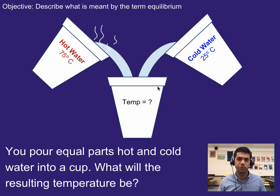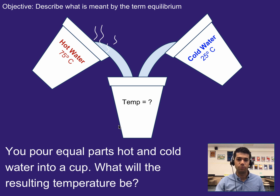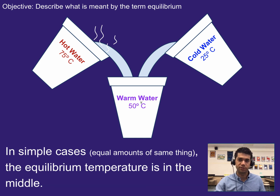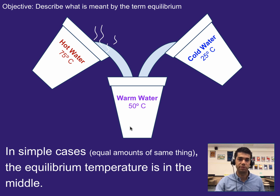We can apply this to another scenario. Imagine we had two cups of water — one was hot water at 75 degrees and one was cool water at 25 degrees. If we poured equal parts into each, say two ounces of hot water and two ounces of cold water, what would the resulting temperature of our mixture be? Hopefully you realize it would mix to 50 degrees Celsius. In simple cases, meaning equal amounts of the same thing, the equilibrium temperature is just the average — literally the middle temperature.